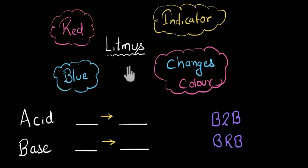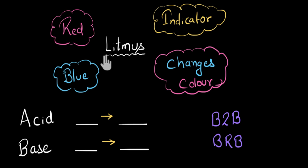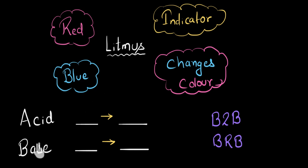Let's summarize the video. Litmus is a type of indicator that indicates the presence of acid or a base by changing its color, and it is generally available in two colors: red and blue. Remember which litmus changes to what color when in contact with acid or a base, and use the mnemonic B2B or BRB to recall this. If you forgot, go back and watch the video to recall these things.